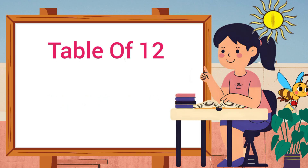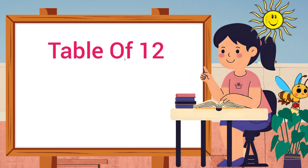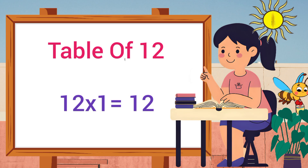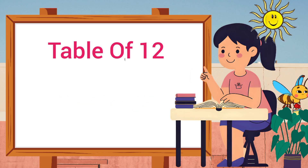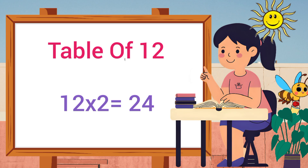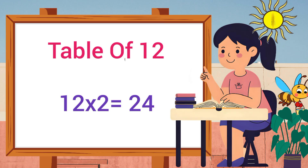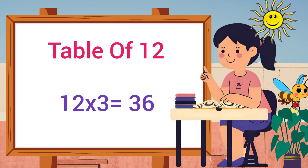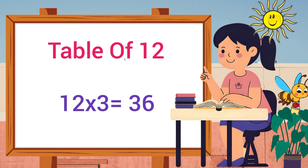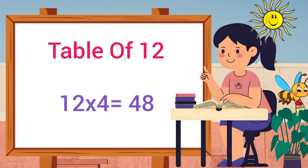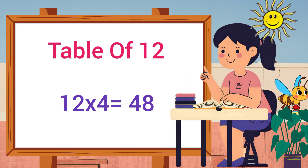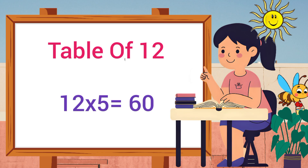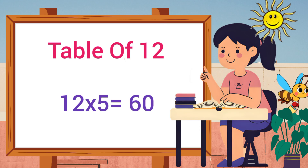Let's do it again. Twelve ones are twelve, twelve twos are twenty-four, twelve threes are thirty-six, twelve fours are forty-eight, twelve fives are sixty.